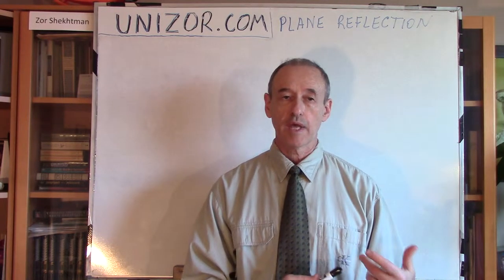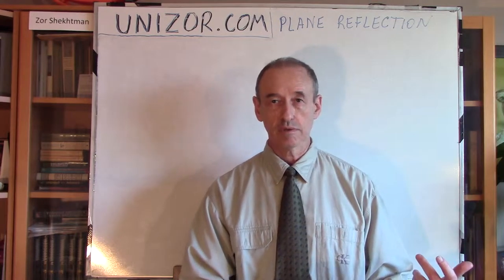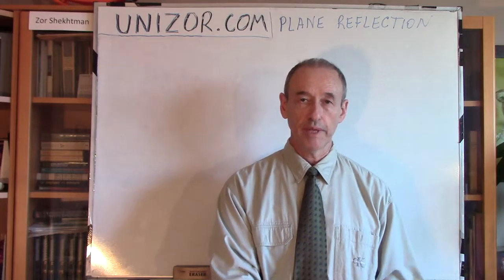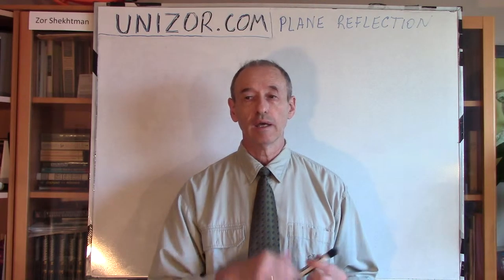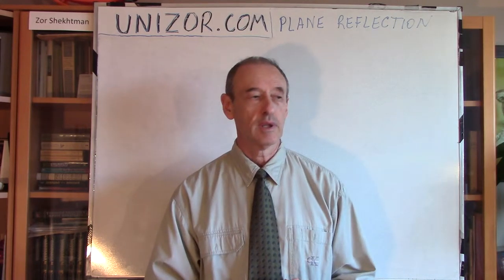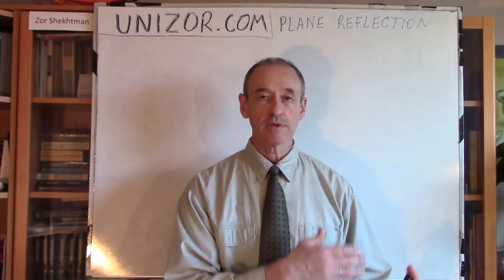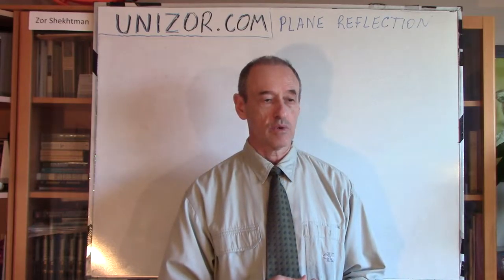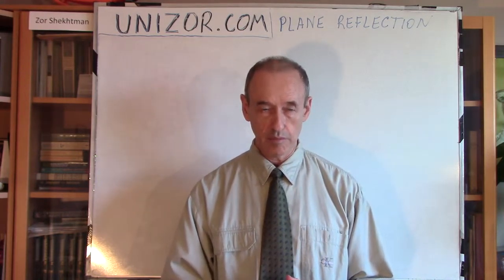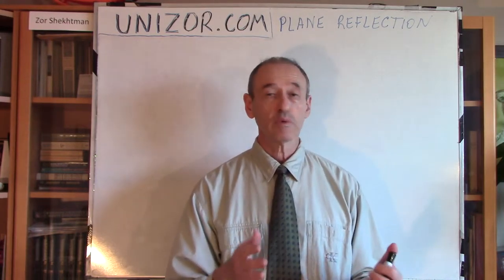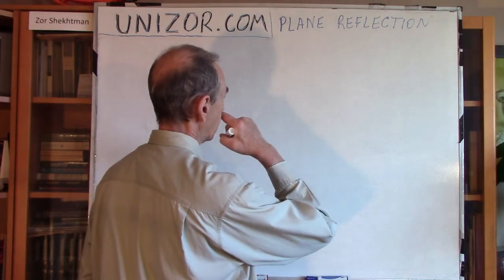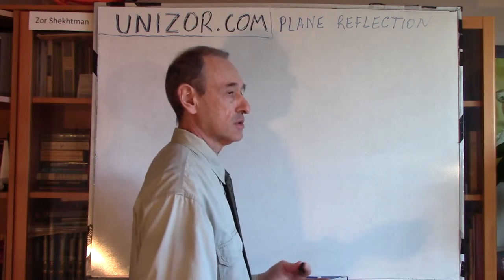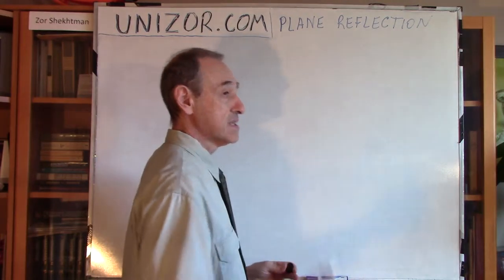We have proven that the image of a line during central symmetry is a line, and the image of a plane is a plane. Now we will talk about a different kind of symmetry — symmetry relative to a plane of reflection, or reflection plane. Let me first explain how this symmetry is organized and how to construct a symmetrical image, and then we will prove exactly the same two theorems: that the image of a line is a line, and the image of a plane is a plane. Imagine that you have a plane, which we will call a plane of reflection, or plane of symmetry.